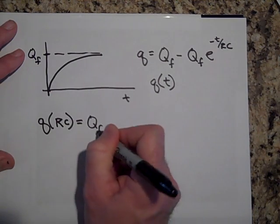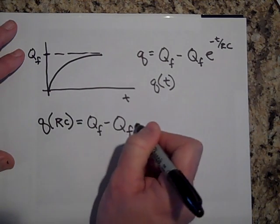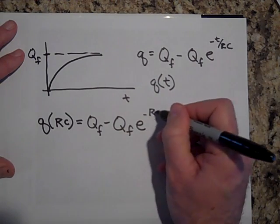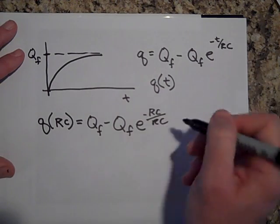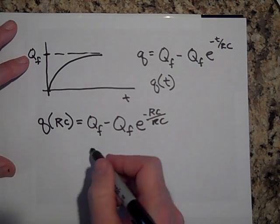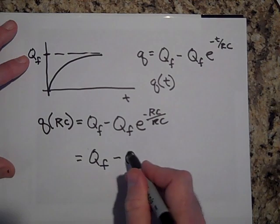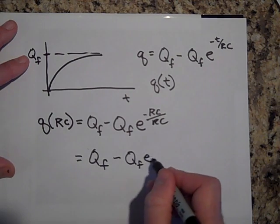Then let's see what you get. You get Q final, minus Q final E to the negative. And if I sneak in for T, if I sneak in RC, sure enough, this goes to Q final, minus Q final E to the negative one.